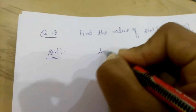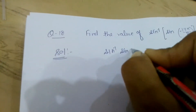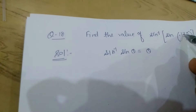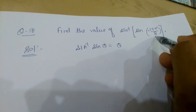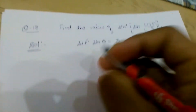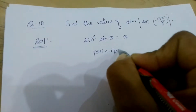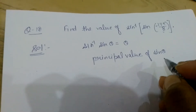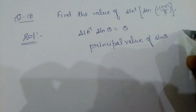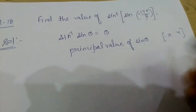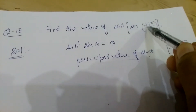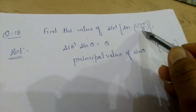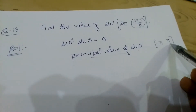Now, sin⁻¹(sinθ) = θ, but the answer is not simply -17π/8. We have to remember the principal value of sin⁻¹. The principal value of sin⁻¹ lies between -π/2 to π/2. Observe that -17π/8 does not lie in this range, so we need to convert this value into that range.